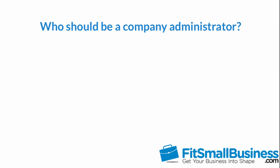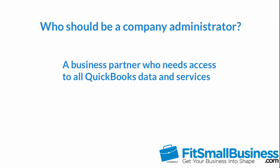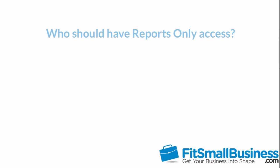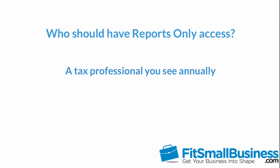The next user type is the company administrator. The company administrator has access to all of your QuickBooks data as well as any additional services like payroll or payments. This level of access should be limited to decision makers only — business owners, partners, or officers of the company. The third user type is reports only. You can give reports-only access to someone who does not need access to anything else. For example, a tax professional who you see annually can run any reports they need — such as an income statement, balance sheet, and cash flow statement — to complete your tax return.